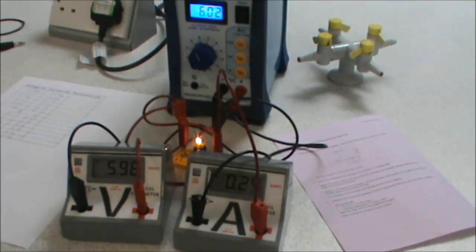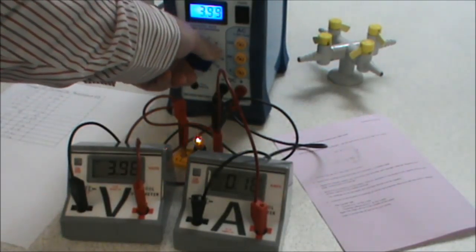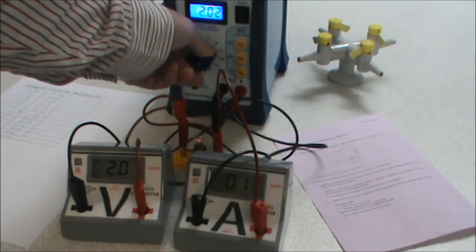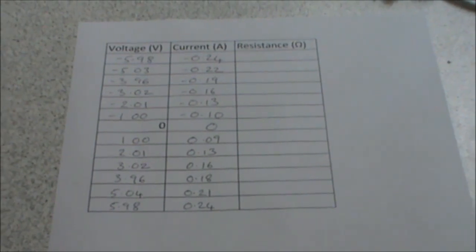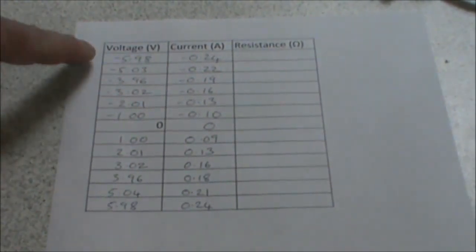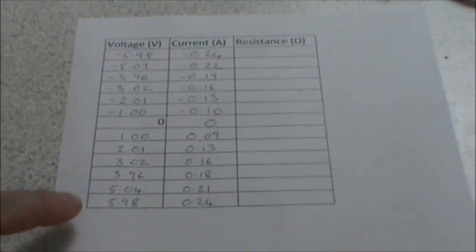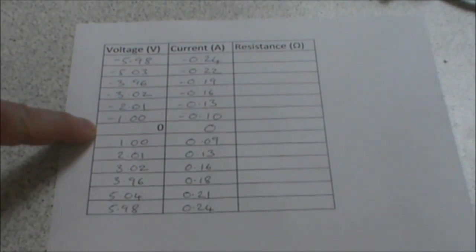If you watch the lamp, you can see that on six volts, it's very, very bright, and as I reduce the voltage, the lamp gets dimmer until it goes out at one volt. So, having completed the experiment, you can see there are my results from minus 5.98 up to plus 5.98, with our zero reading in the middle.